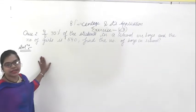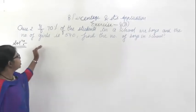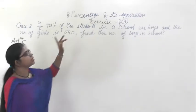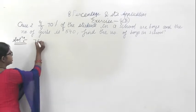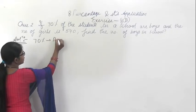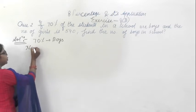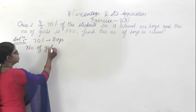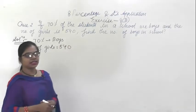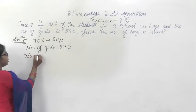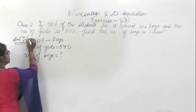This is exercise 8B on percentage and its applications, question number 2. The question says if 70% of the students in a school are boys, and the number of girls is given as 540, find the number of boys in the school.